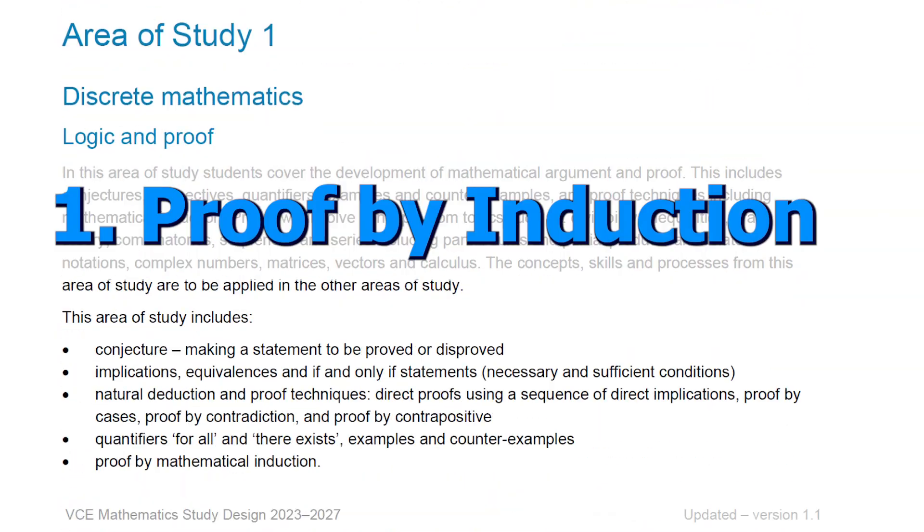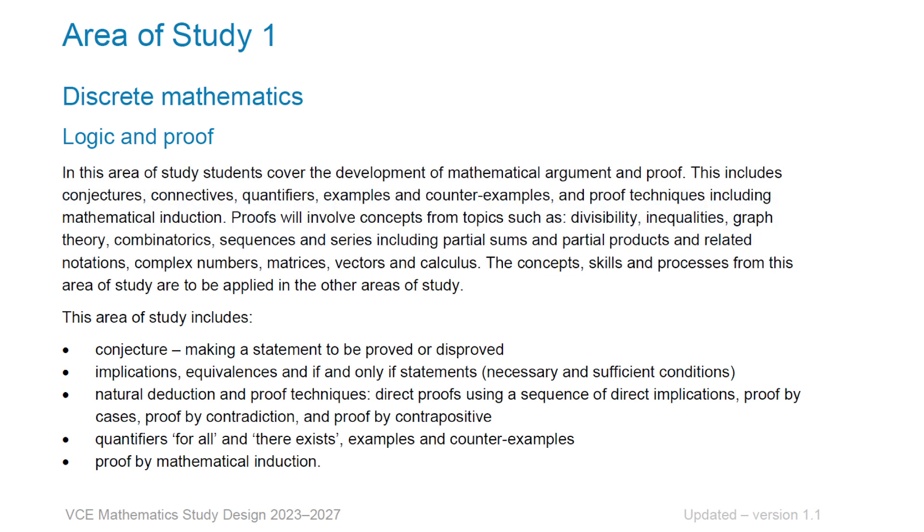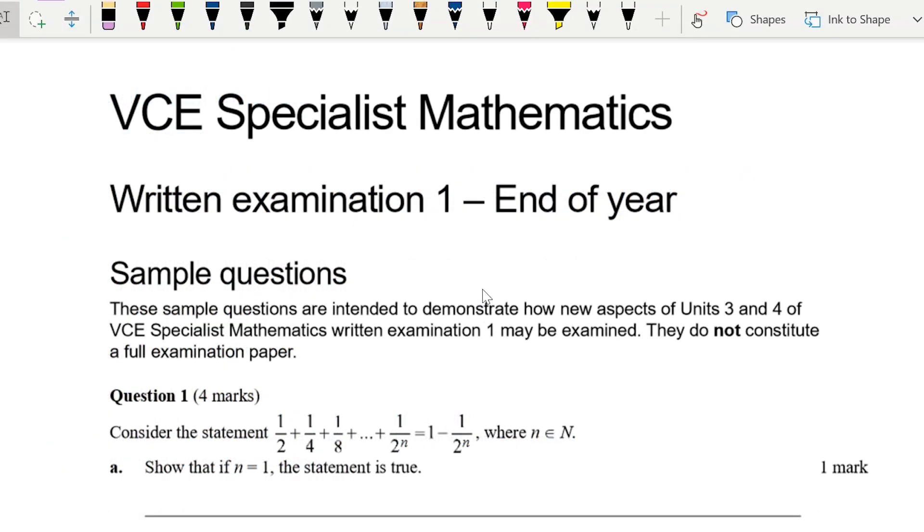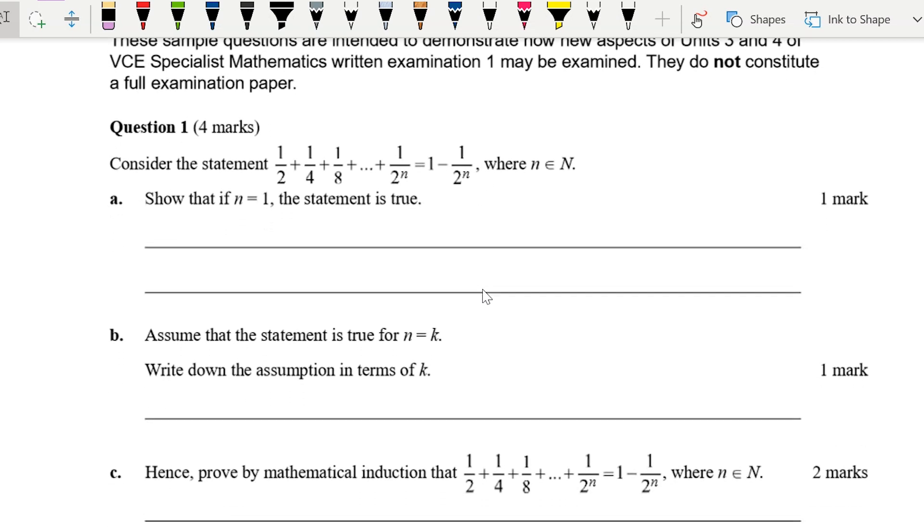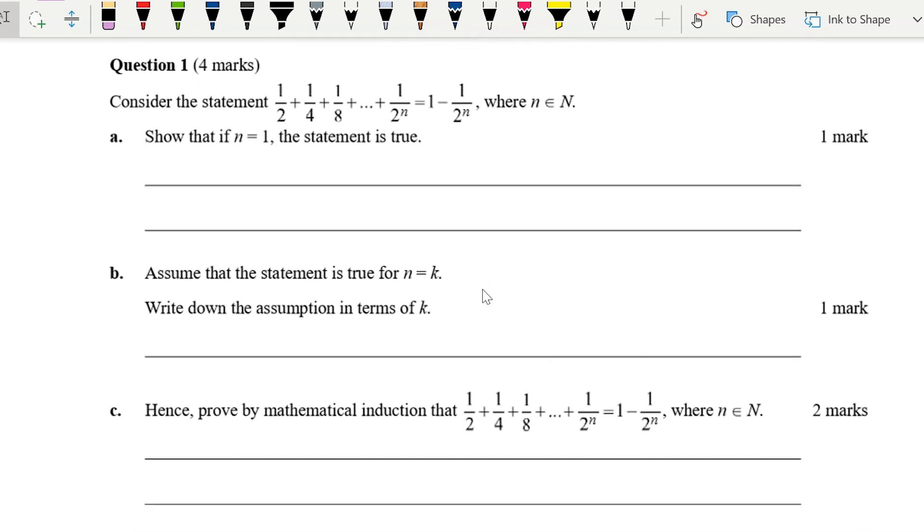Number one is proof by induction. Logic and proof is a brand new area of study in 2023, replacing the old mechanics area of study, which has now gone—no questions on mechanics or dynamics or forces this year. Within the logic and proof area of study, I would predict that proof by induction is the most likely to come up and the most likely to be given a fair weight in terms of marks. Let's go through a couple of examples. These are from the VCAA samples, 2023 sample questions, and this is the very first question on those samples in the exam 1 samples—it's a proof by induction question.